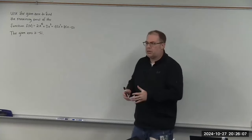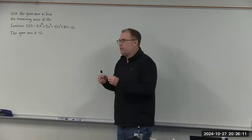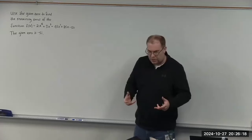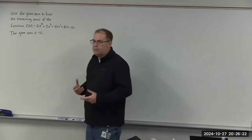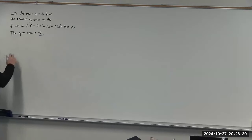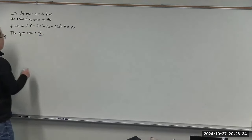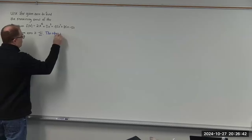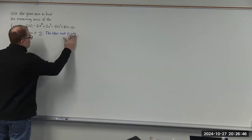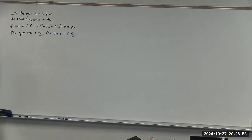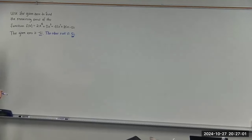Using that information, we can construct a polynomial from those roots, and that polynomial turns out to be a factor of this function. We can then use long division to find the remaining zeros. So we have minus 5i and 5i — these are complex conjugates of each other. Now let's construct the polynomial for both of these roots.